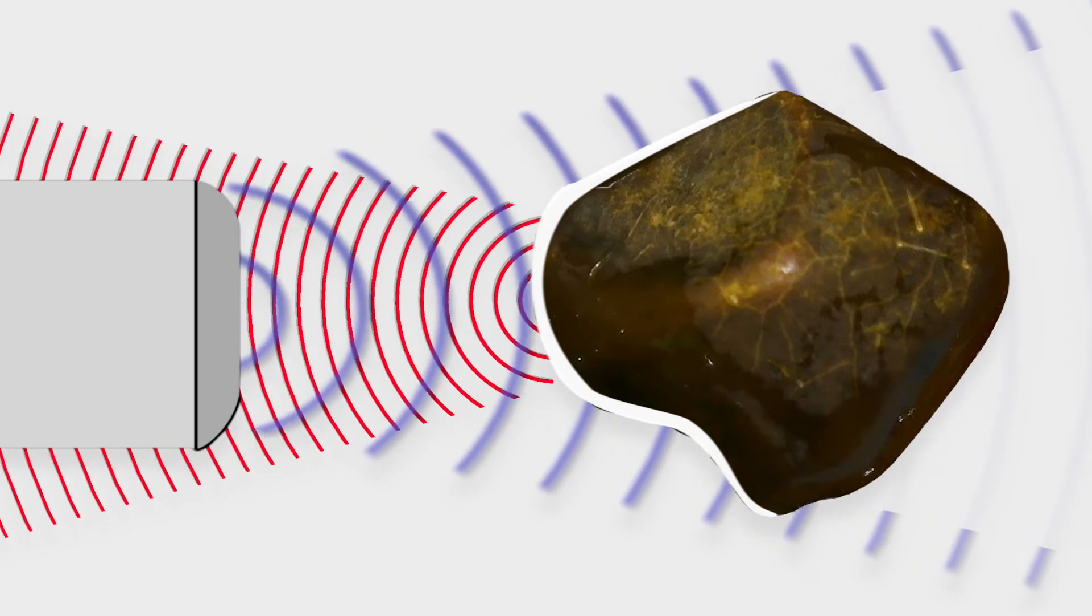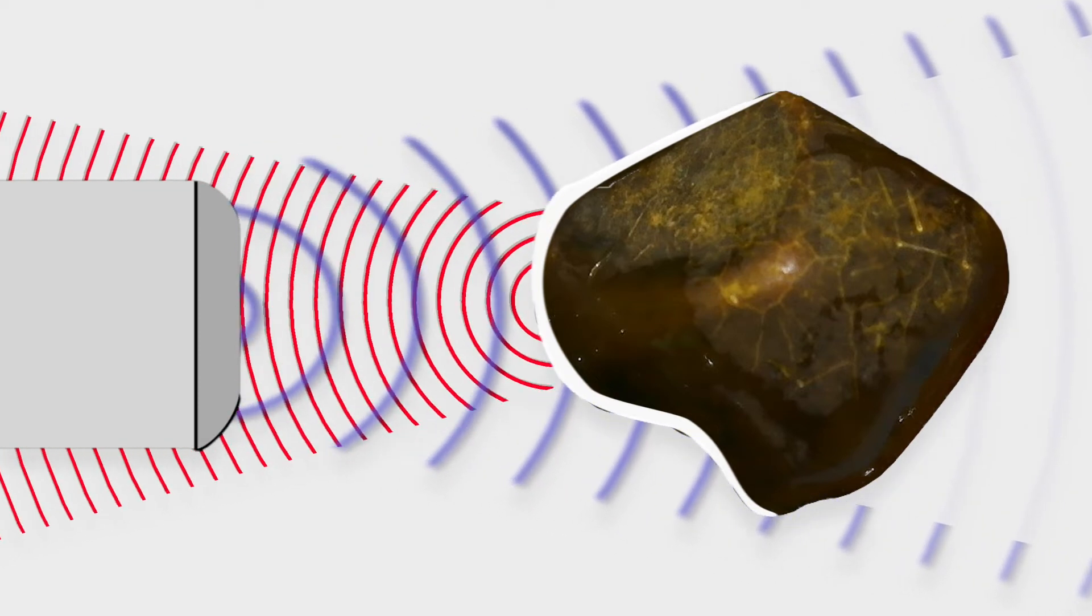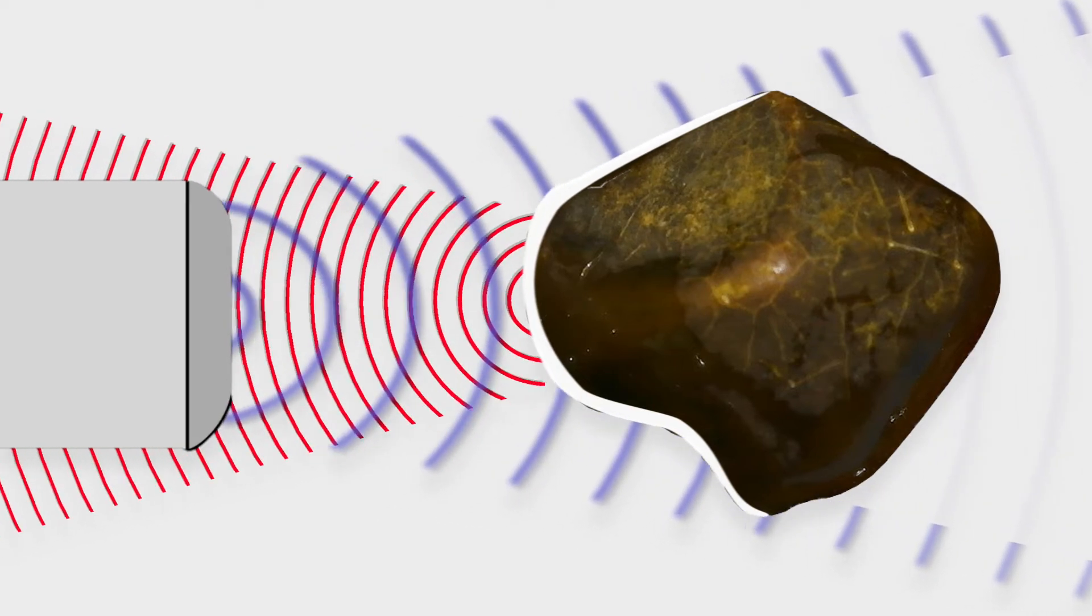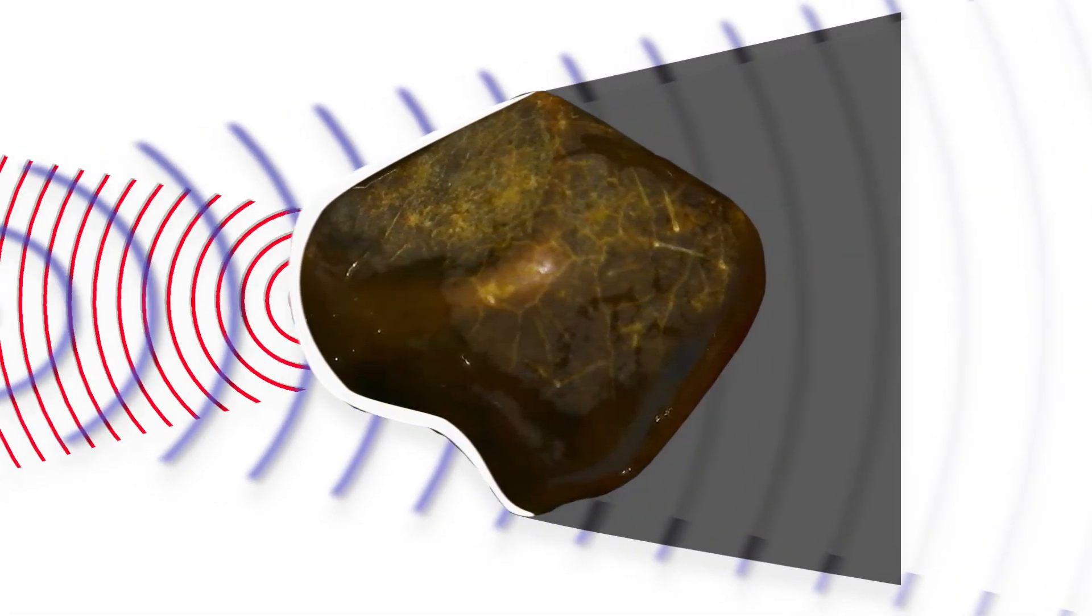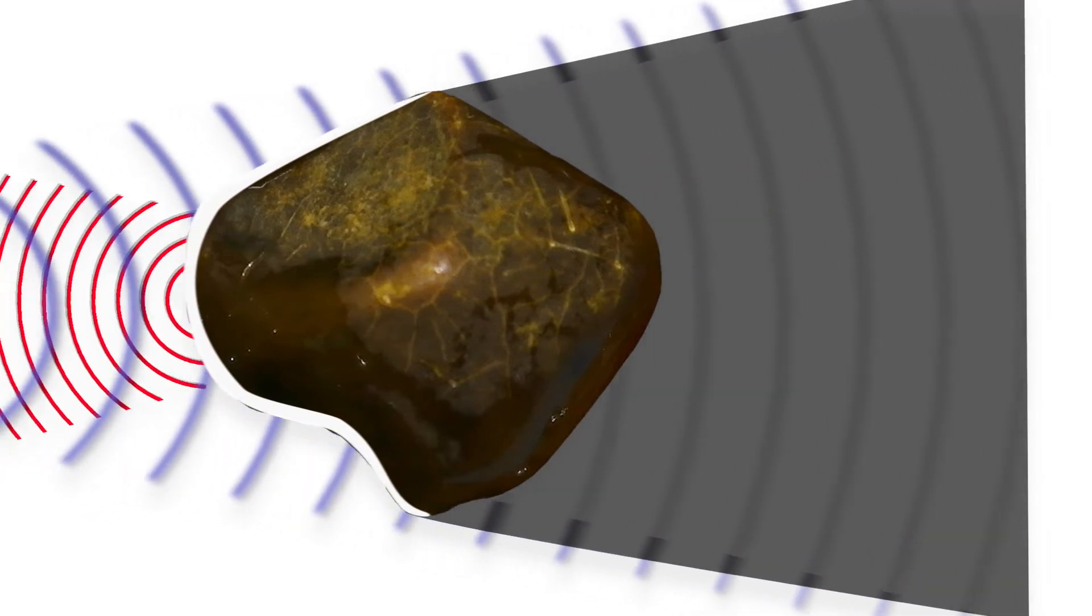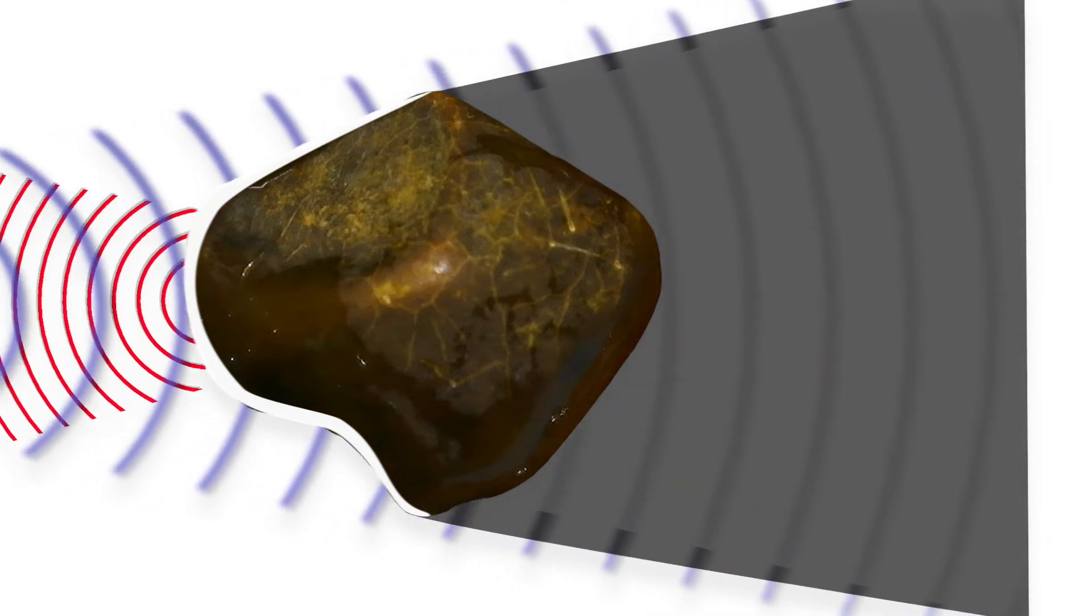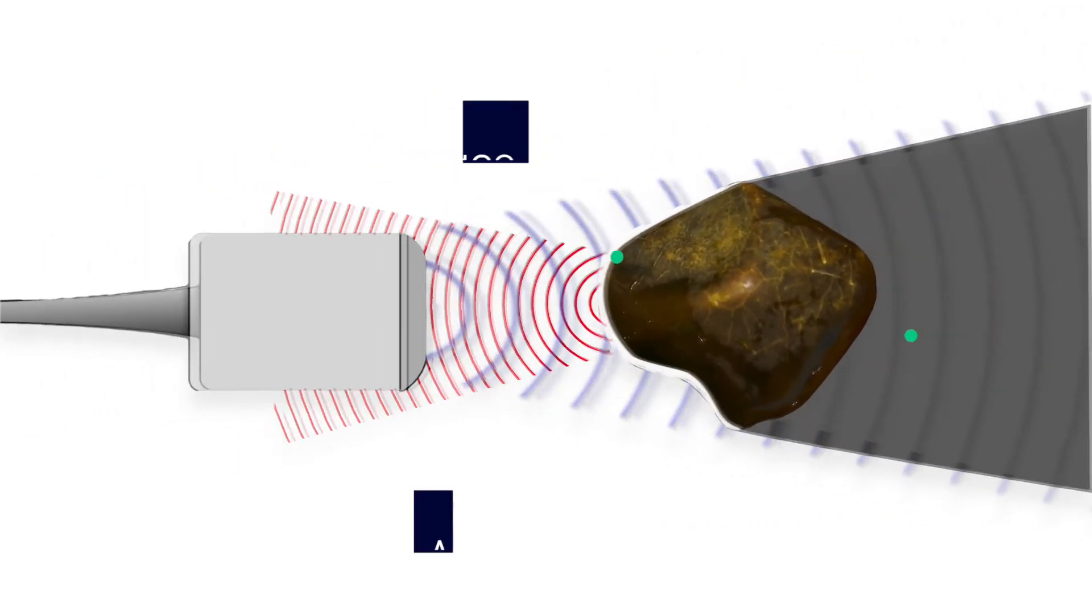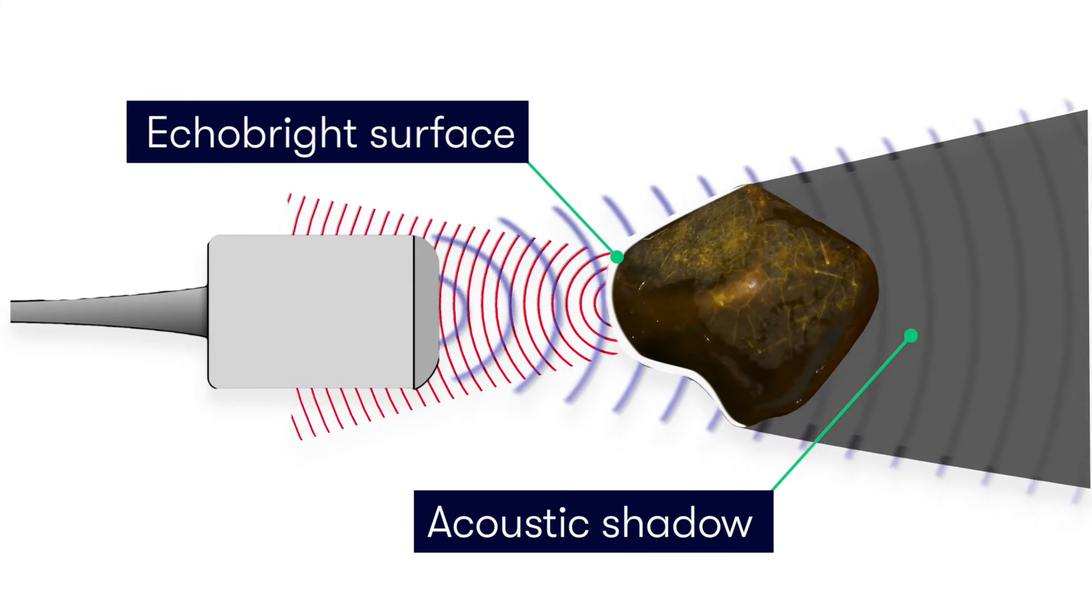This surface will show up really bright on our CPU image, so we describe this surface as being echo bright. The other thing to look for is because all of the waves are reflected back to the transducers and none pass through the stone, this creates a very dark area beyond the gallstone. And we call this area the acoustic shadow. So if you look for these two features - an echo bright surface and an acoustic shadow - then you should be able to spot a gallstone.